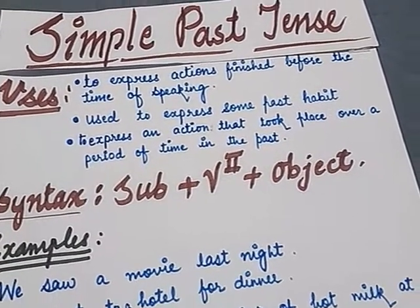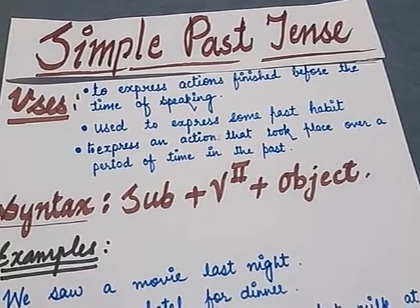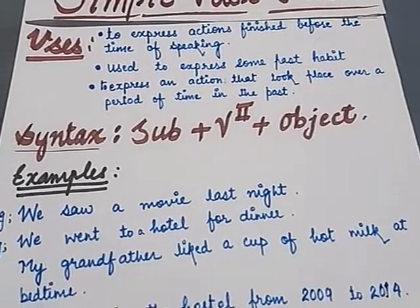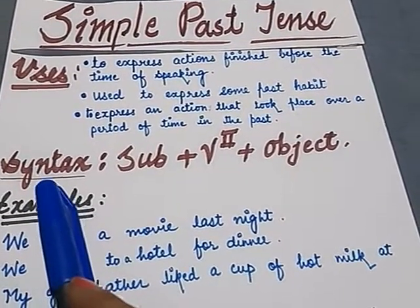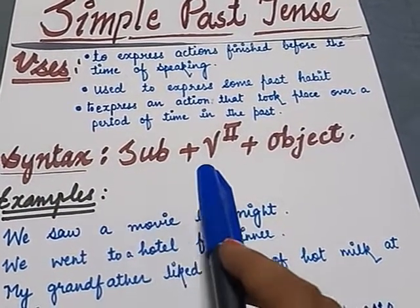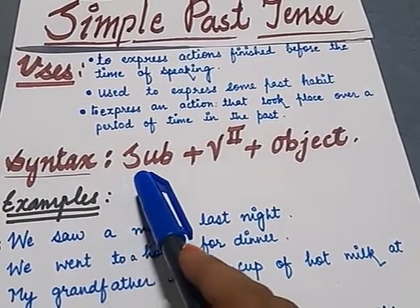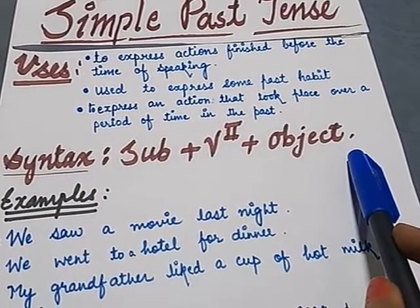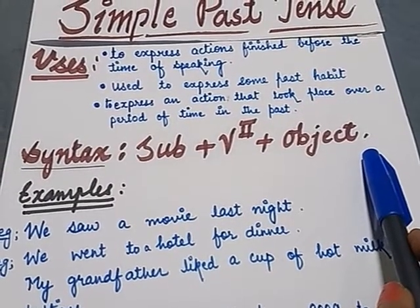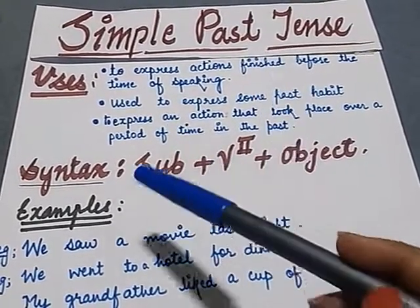Simple past tense is a subtopic in chapter number 3, 'Verbs Expressing the Past.' So let us start this video and see what is the syntax of simple past tense. You have to use the subject first, then the verb second form, and then the object. This syntax is used for affirmative sentences. Now let us discuss the uses of simple past tense with the help of examples.